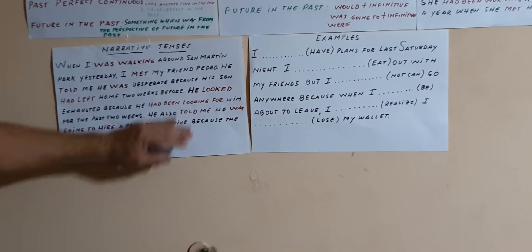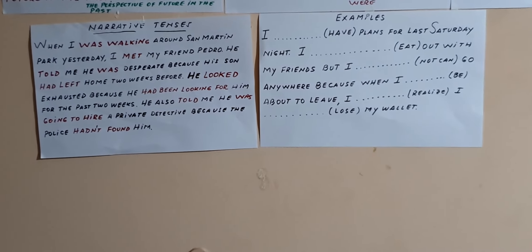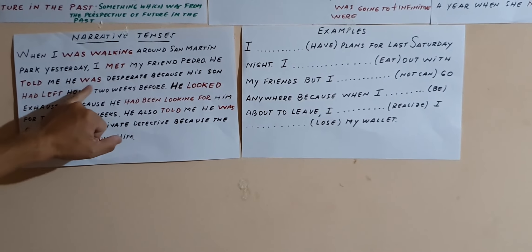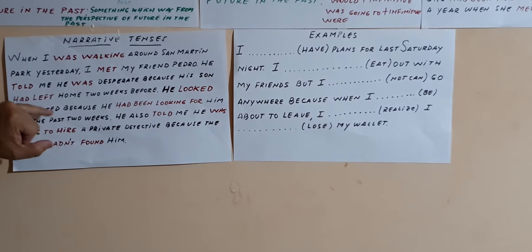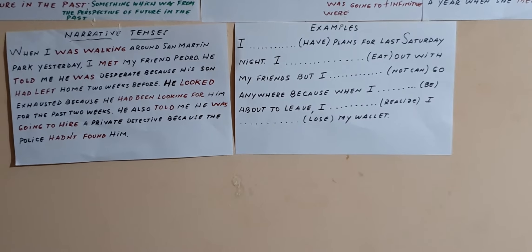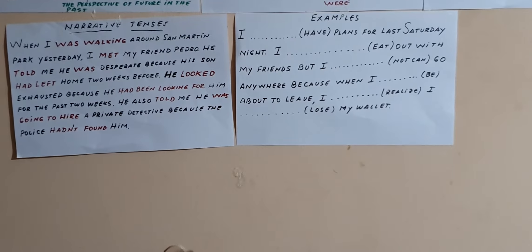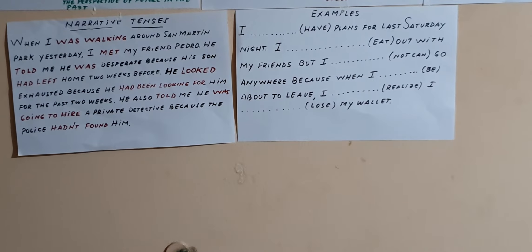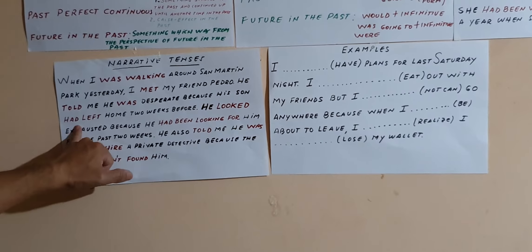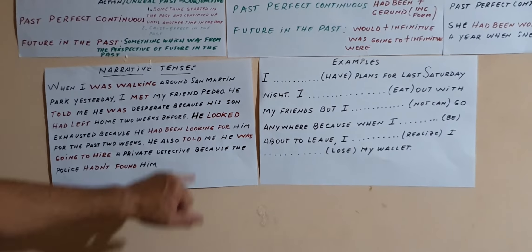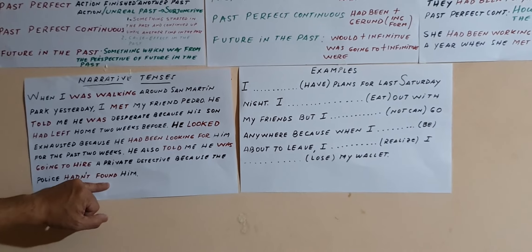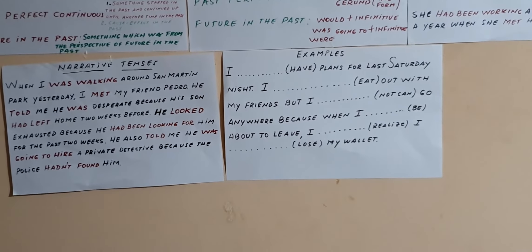I wrote here an example using the different narrative tenses: 'When I was walking around San Martín Park yesterday, I met my friend Pedro. He told me he was desperate because his son had left home two weeks before. He looked exhausted because he had been looking for him for the past two weeks. He also told me he was going to hire a private detective because the police hadn't found him.' — Past continuous, past simple, past simple, past perfect, past simple, past perfect continuous, past simple, future in the past, and past perfect. These are all the tenses that we are going to use in a narrative story.